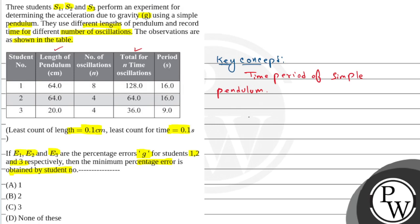Time period formula is T equals 2π root L by g. So here, this is the time period of simple pendulum where L is the length of the simple pendulum. We have to find g's error.